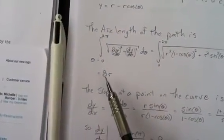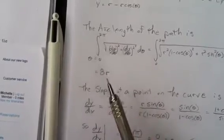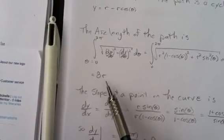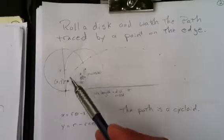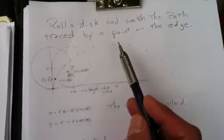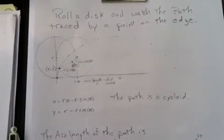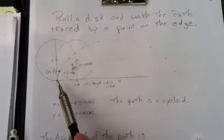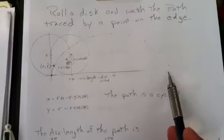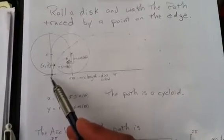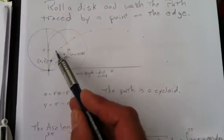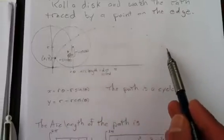And then, evaluating from 0 to 2pi, you should find that 8 times the radius is the distance traversed by that point traveling through 2-dimensional space there. Which is kind of neat. So, if this were radius 1, although we covered 2pi horizontally, rolling that circle, its circumference, the point that we watched traveled 8 units.